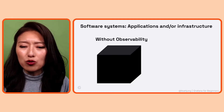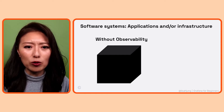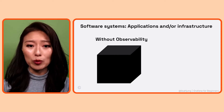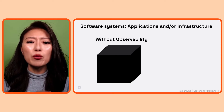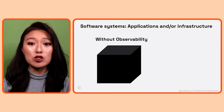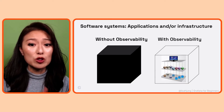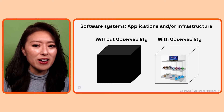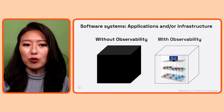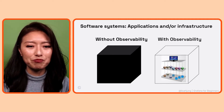So if something goes wrong, it's going to be more difficult and more time consuming to solve a problem. With observability, we turn this black box into a glass box. We're able to observe what's going on inside so we could fix or improve the performance, behavior, and health of a system.